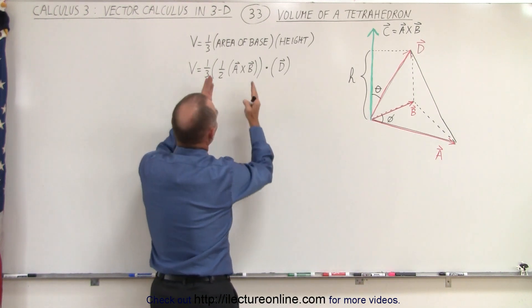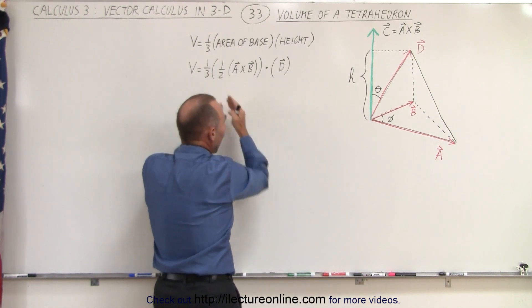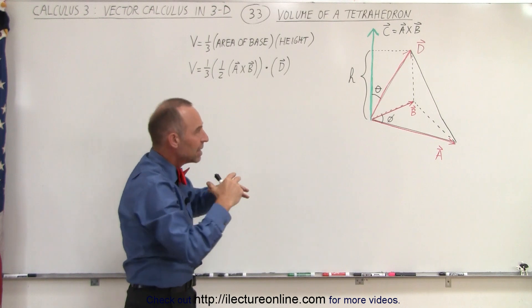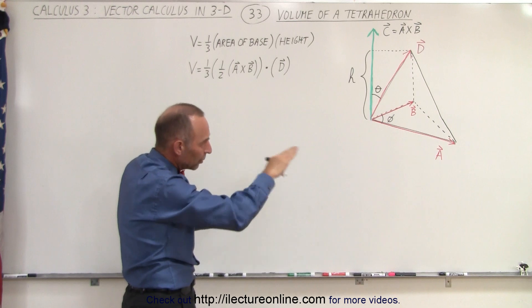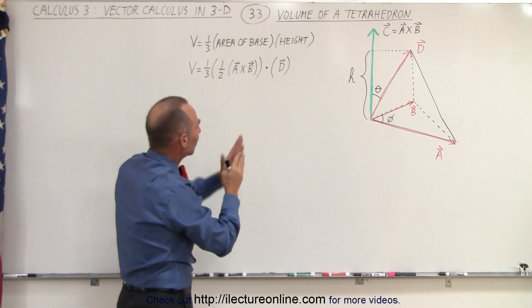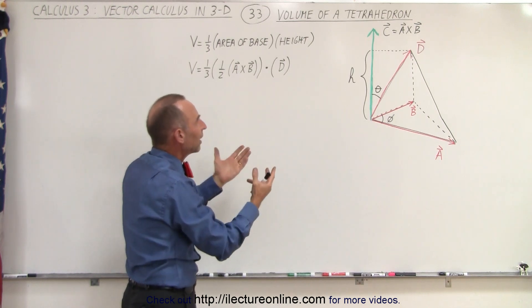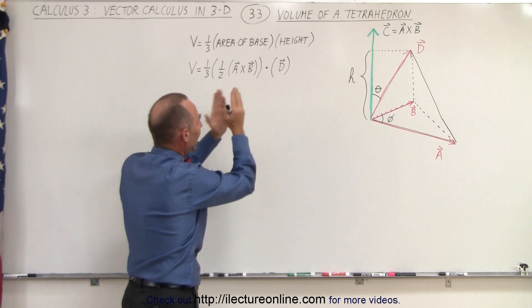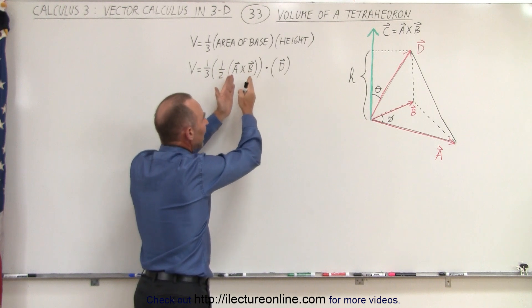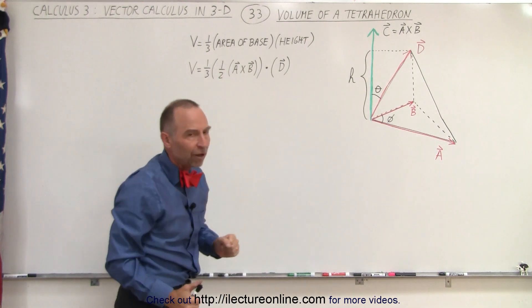So essentially we have A cross B times one-half, which gives us the vector perpendicular to the plane of A and B, where the base is, then we dot that with the vector D, and we get the height from that dot product. We multiply the height times the size of the area, and we have the volume.